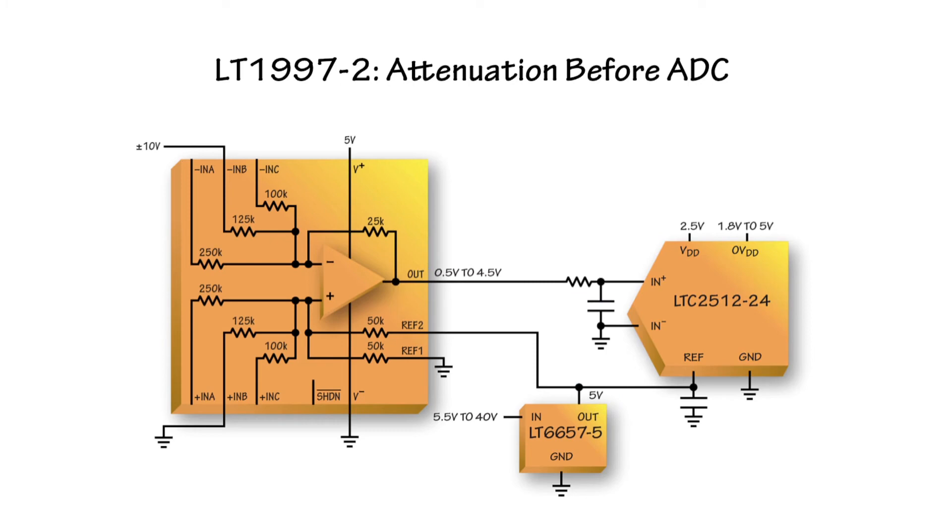The op amp inside the LT1997 features a rail-to-rail output stage. This means that the output signal can swing quite close to either supply rail with good performance.